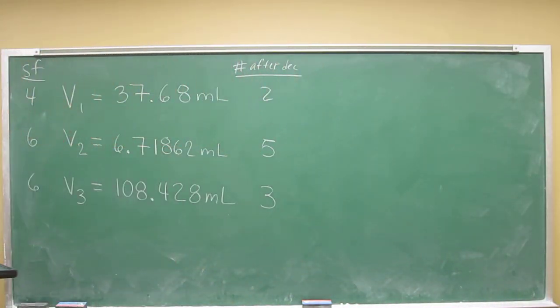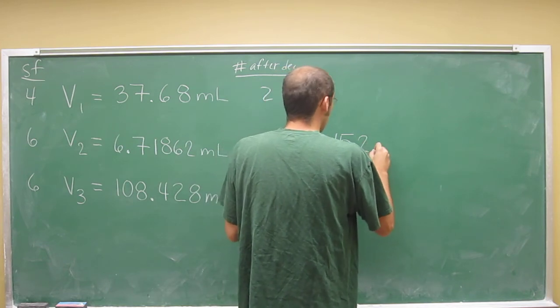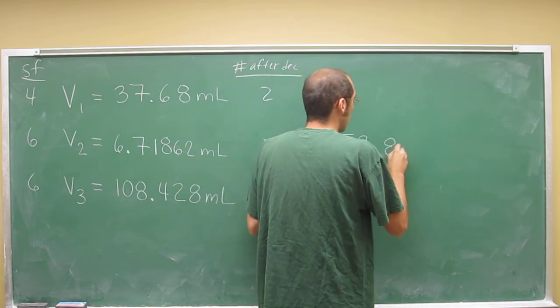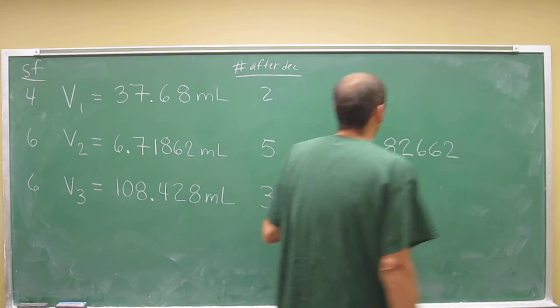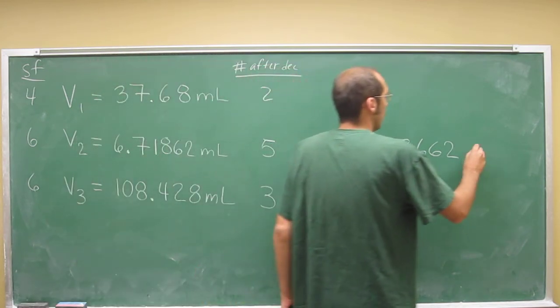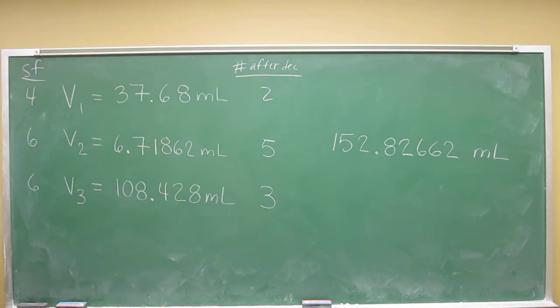So let's just go ahead and do it on our calculator. Just add these things up: 37.68 plus 6.71862 plus 108.428. So my calculator gives me this number, 152.82662, and then of course we want to put mL on there because if we've got units on our number then it's meaningless if we don't have units in our final answer.